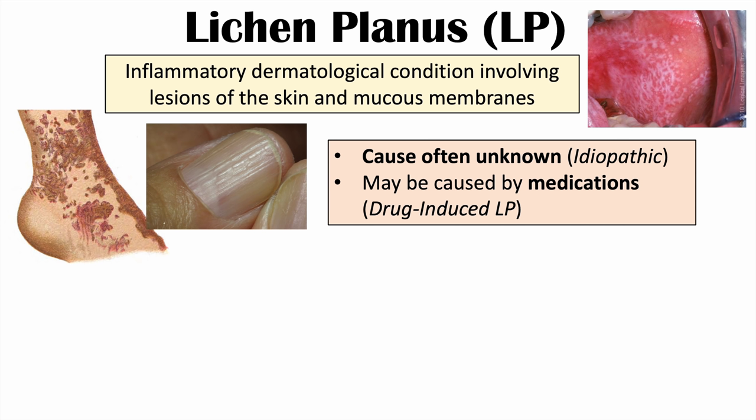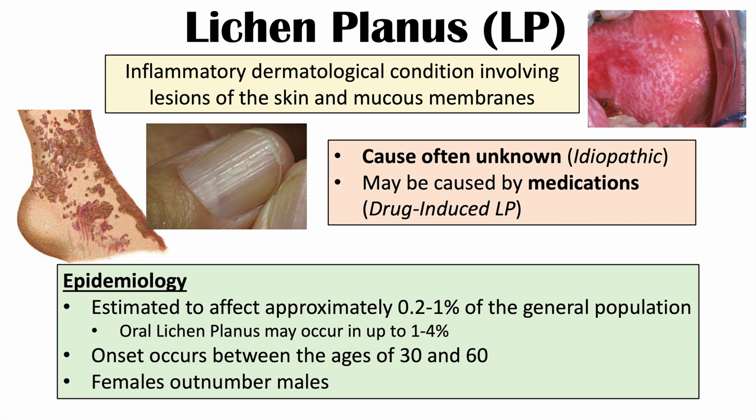If it was due to a medication, it would be considered drug-induced lichen planus. It's estimated to affect approximately 0.2 to 1% of the general population. The oral lichen planus form is actually the most common form, estimated to affect up to 1 to 4% of the general population. The onset of this condition occurs between the ages of 30 and 60, and females outnumber males.